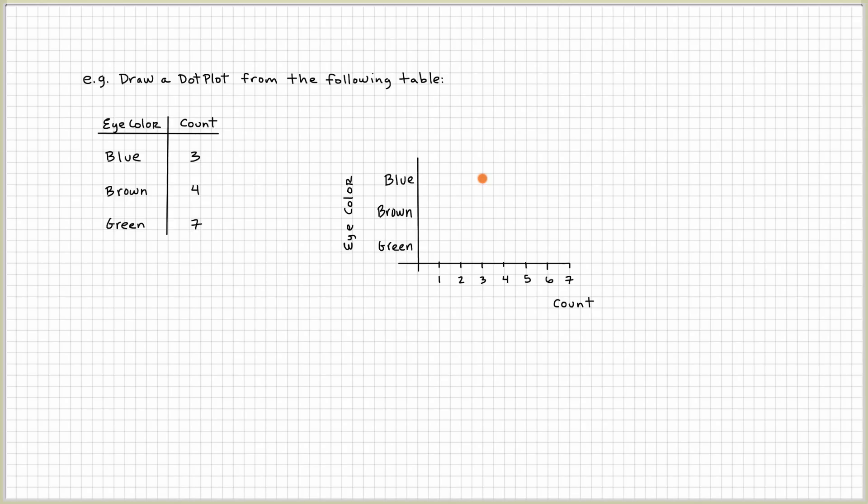Next one says brown is four. So we look at four, right, in our count. We can't put the dot here because that represents green. But if we go up a little bit, this row represents brown. So let's do that. Let's put the dot right there for brown. And then for green being seven, let's look for seven on our number line. And then we put the dot right here.